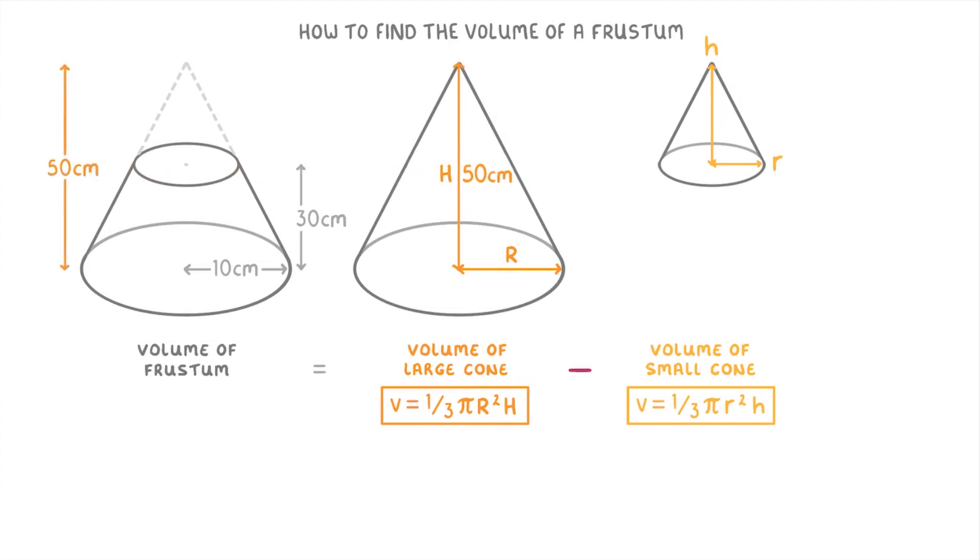We can tell straight away that for the large cone the height is 50 centimeters and the radius is 10 centimeters because we were given those on our diagram of the frustum. The small cone is a bit trickier though because we're not directly given its radius or its height.